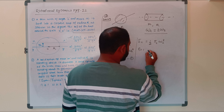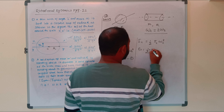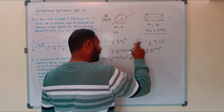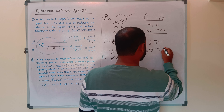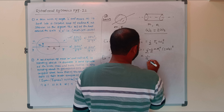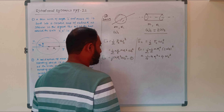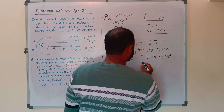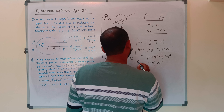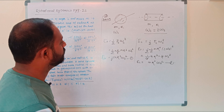The rotational kinetic energy for the solid cylinder is (1/2) × (1/2) M R² × ω_c². Since ω_c = 2 ω_s, substituting gives (1/4) M R² × (2 ω_s)² = (1/4) M R² × 4 ω_s². The 4 cancels, leaving (1/2) M R² ω_s² — this is equation two.